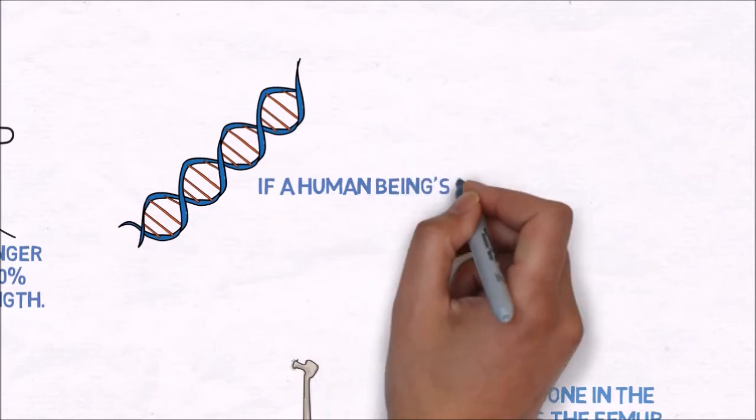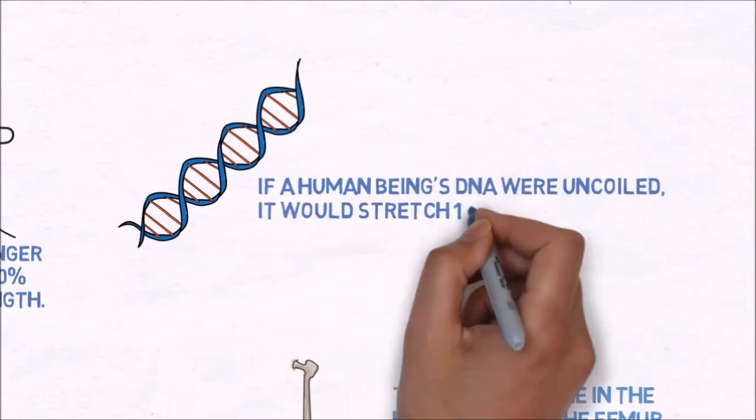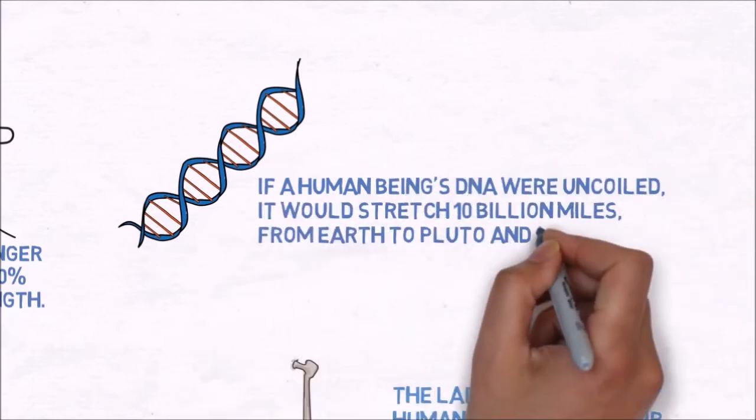If a human being's DNA were uncoiled, it would stretch 10 billion miles from Earth to Pluto and back.